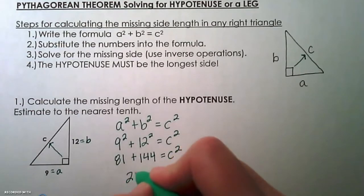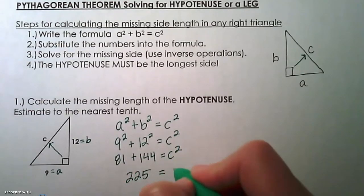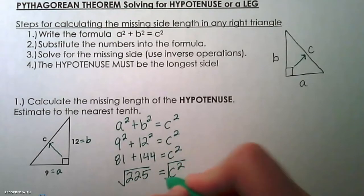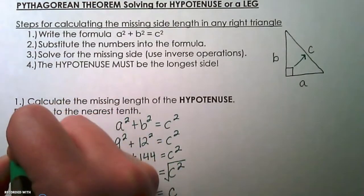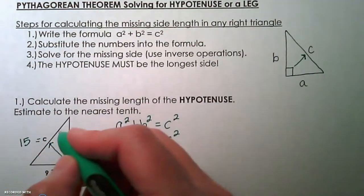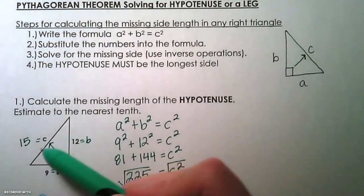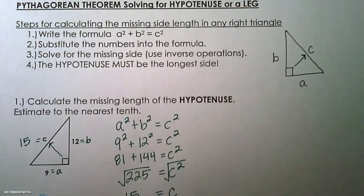81 plus 144 is 225, and then the final step, this is your inverse operation, take the square root to unsquare c squared to give you c equals 15, and that would be the length of the longest side of the right triangle. So keep in mind, the hypotenuse has to be the longest side.